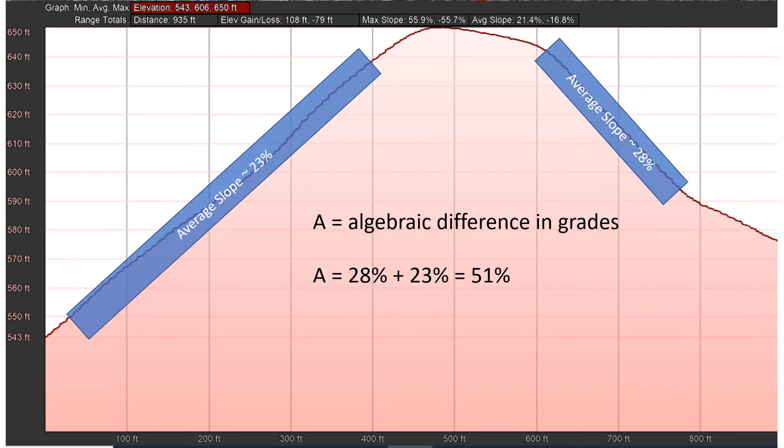We're going to add these two together because one is an upgrade, one is a downgrade, uphill and downhill. So 28% plus 23% is 51% algebraic difference in grades.